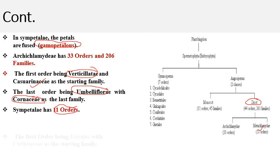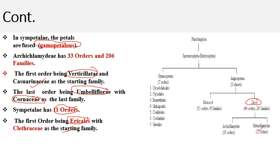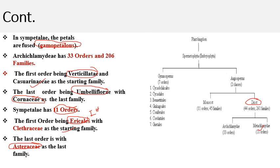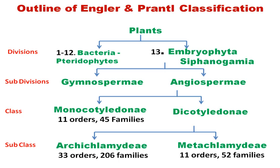In Sympetalae, the first order is Ericales with Clethraceae as the starting family, while the last order ends with Asteraceae as the last family. So the overall outline: Engler and Prantl divided plants into 14 groups — divisions 1 to 13 covering bacteria to pteridophytes, and the 14th being Embryophyta Siphonogamia, which includes plants that produce a pollen tube for the transmission of gametes.